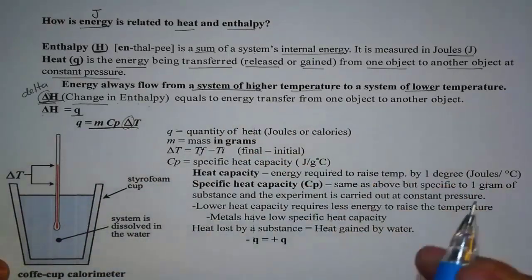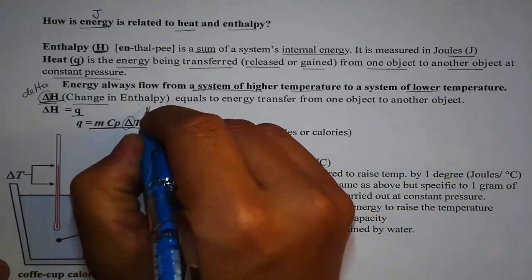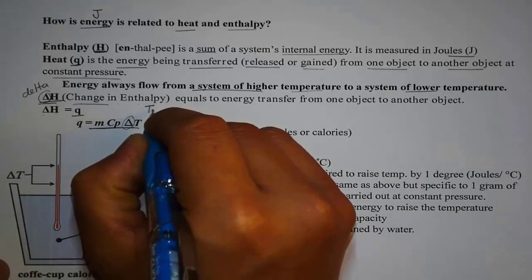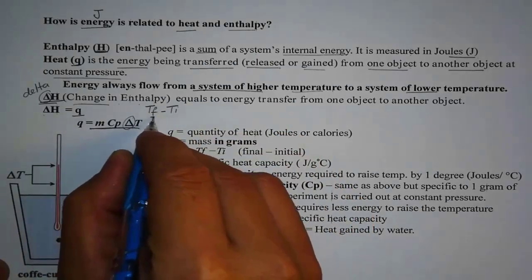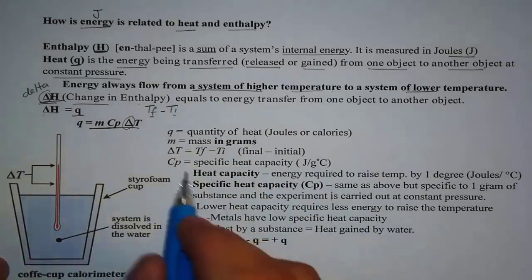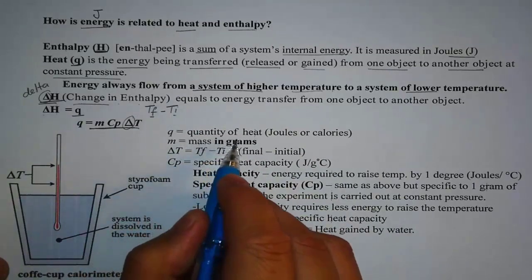When we look at change, what are we really looking at? The change is always relative in terms of final. In this case, we have delta T that's T final minus T initial. So every time you see delta T, always think of final minus initial.